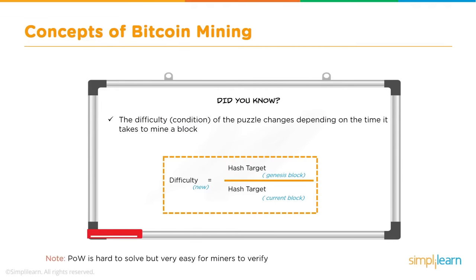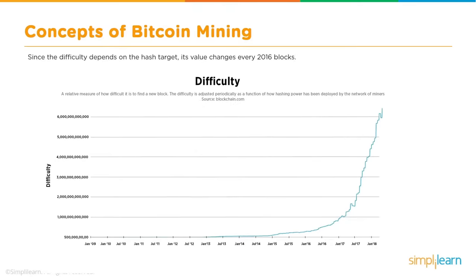It is very hard to generate the proof of work but very easy for other miners to verify — once you've solved the puzzle and broadcast it, others can easily verify your work, and once the majority gives their consensus, the block gets validated and added to the blockchain. The difficulty depends on the hash target and keeps changing after every 2,016 blocks. From Bitcoin's inception in 2009 to today, difficulty has increased exponentially, and the computing power required for mining has increased significantly.